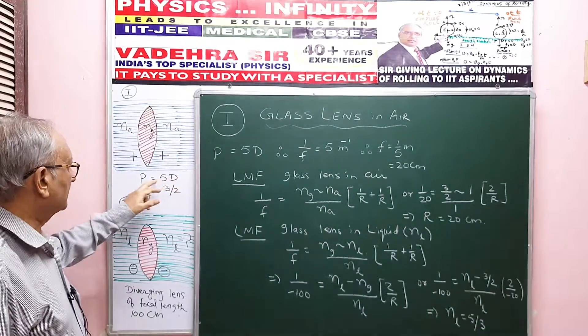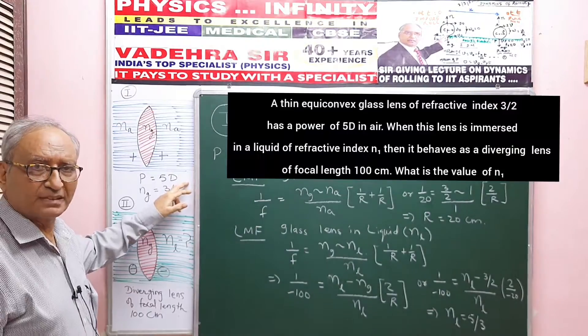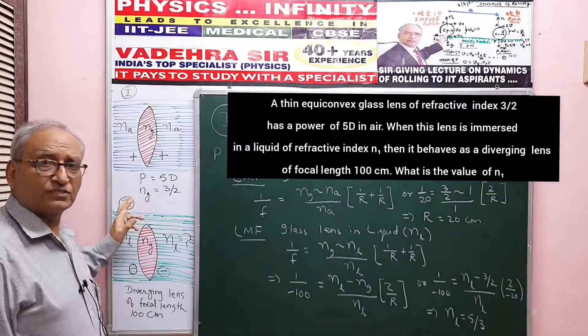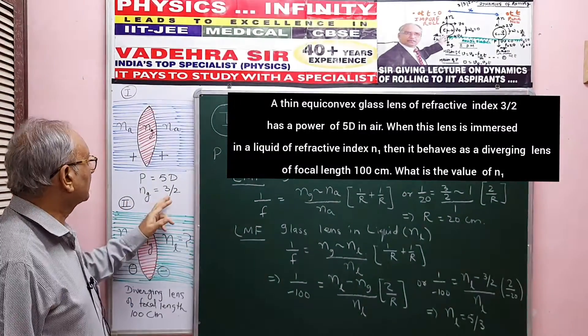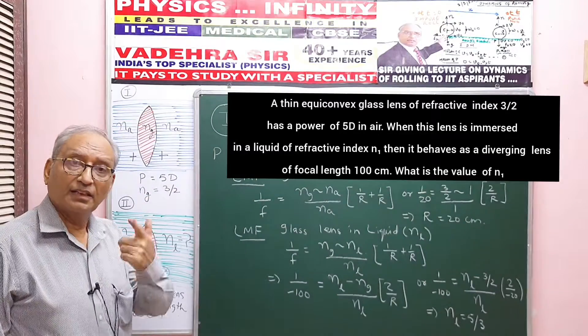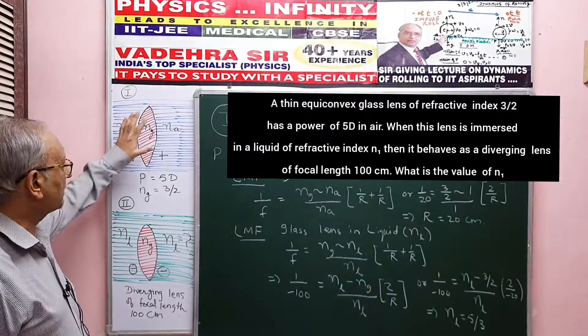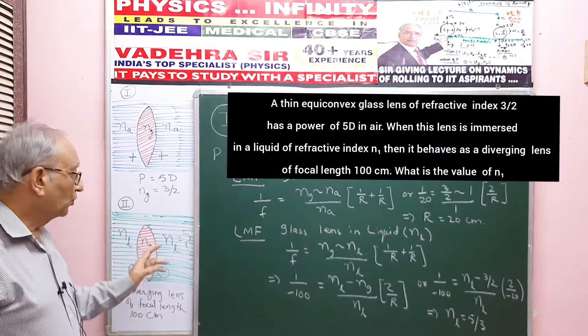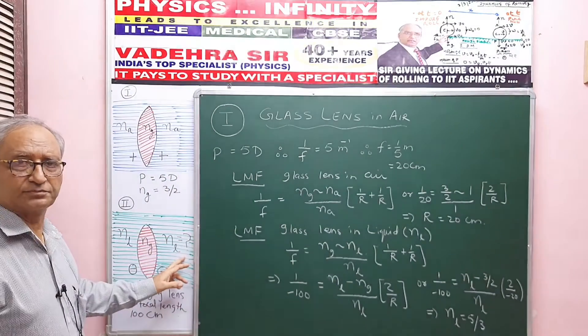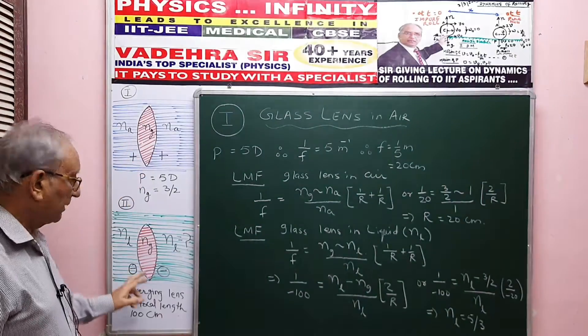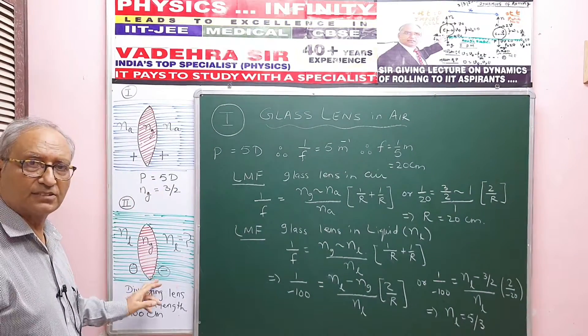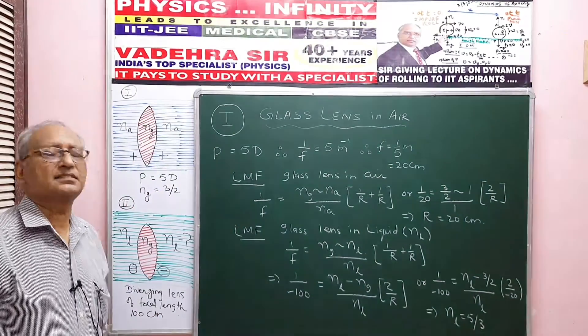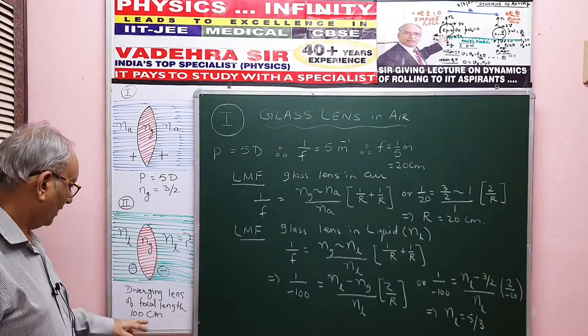Its power is 5 diopters. The refractive index of glass with respect to air is given as 3 by 2. The question says that if the same lens is kept in a liquid whose refractive index is NL, then this lens becomes a diverging lens of focal length 100 centimeter.